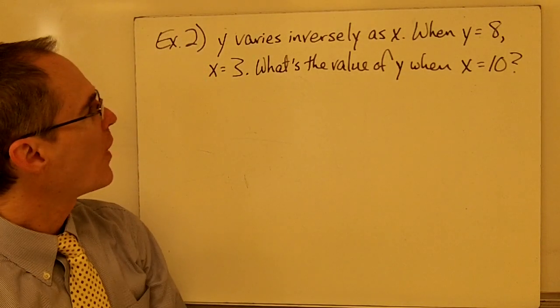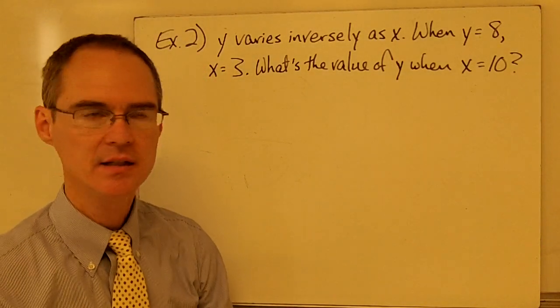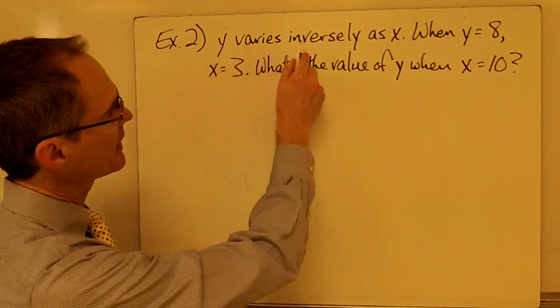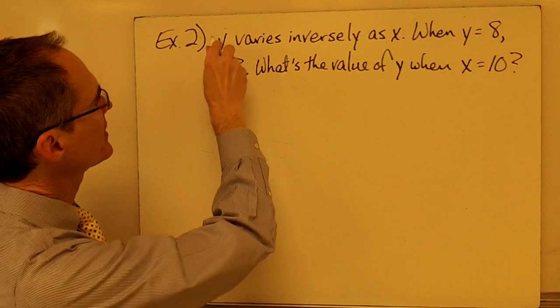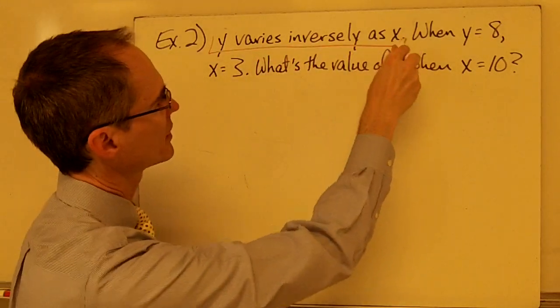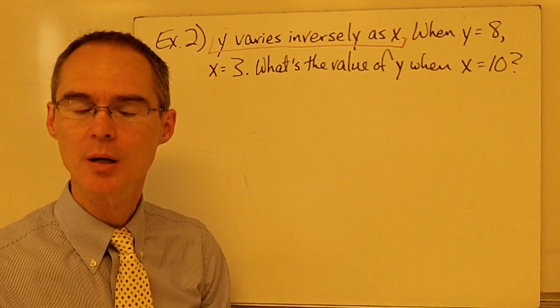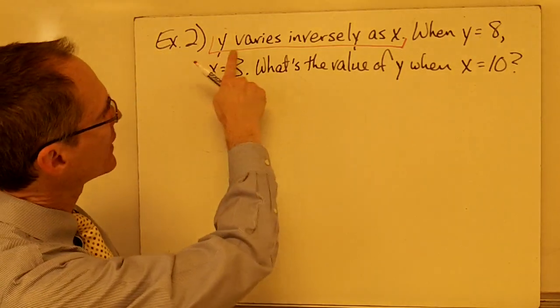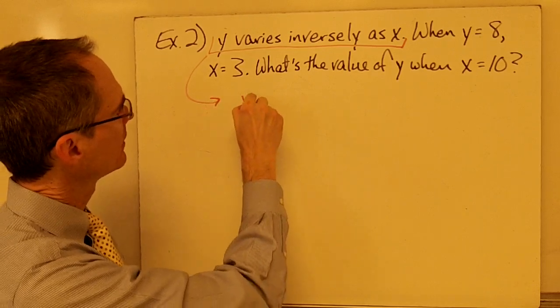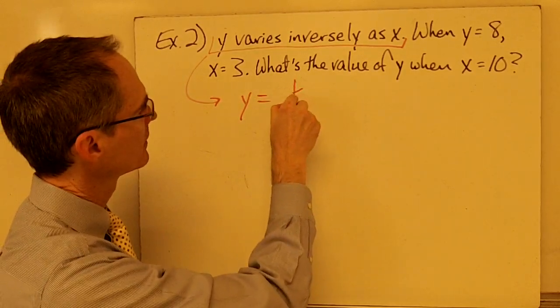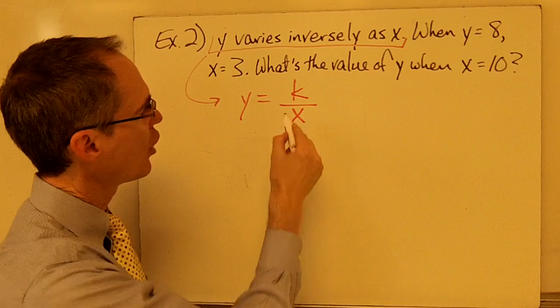Example number two, y varies inversely as x. So, again, this first sentence here in example number two, this tells me that I am working with not a direct variation problem, but an inverse variation problem. And when I see y varies inversely as x, that tells me immediately that y equals k over x.